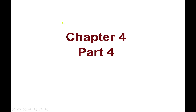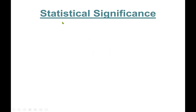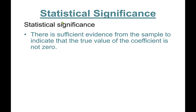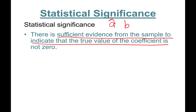Hello everyone, this is Chapter 4, Part 4. In this part we'll talk about statistical significance. Statistical significance means that there's sufficient evidence from the sample to indicate that the true value of the coefficient estimate — a-hat or b-hat — is not zero.